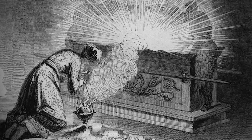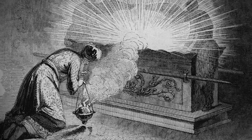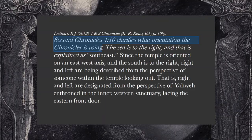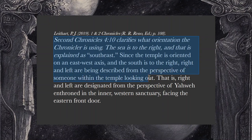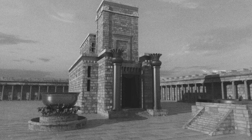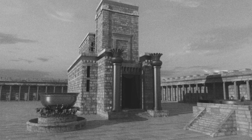Picking back up with Lightheart in his commentary, he says 2 Chronicles 4:10 clarifies what orientation the chronicler is using. The sea is to the right, and that is explained as southeast. Since the temple is oriented on the east-west axis and the south is to the right, right and left are being described from the perspective of someone within the temple looking out — that is, from the perspective of Yahweh enthroned in the inner western sanctuary facing the eastern front door.